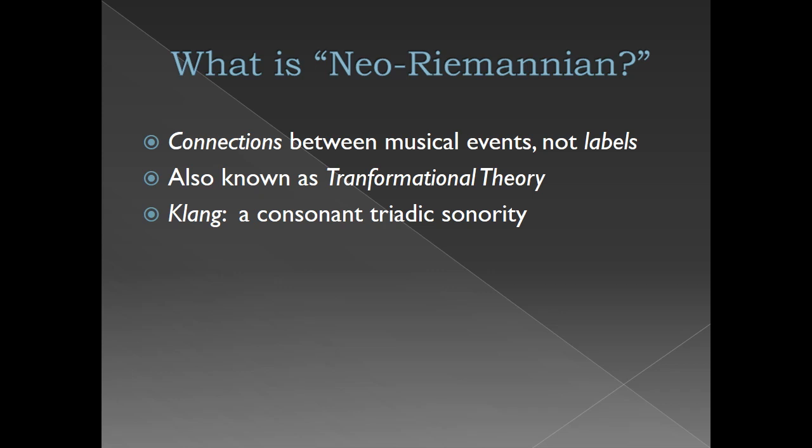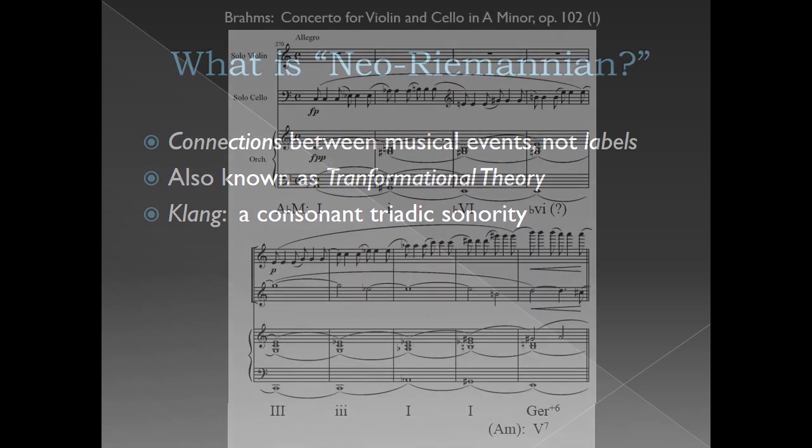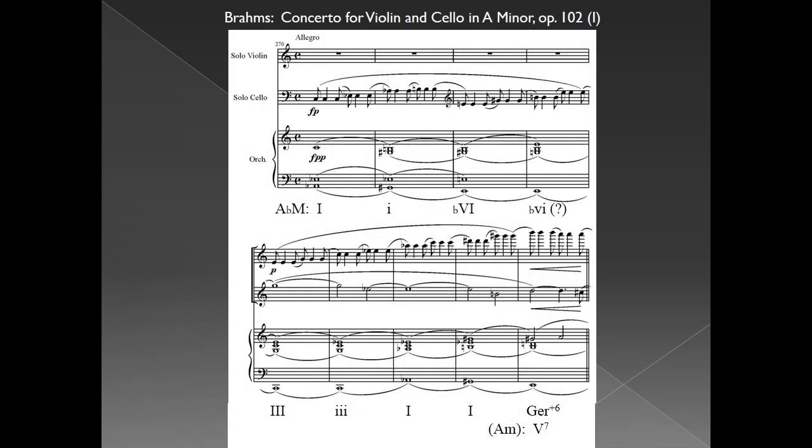Specifically, at least for now, we can think of a clang as a general term for a consonant triadic sonority, essentially meaning any major or minor triad. Let's return to the Brahms that we just examined. You may have noticed before that one triad occurs in each measure, specifically the major and minor triads on A flat, E, or A flat spelled enharmonically, C, and A flat once more.